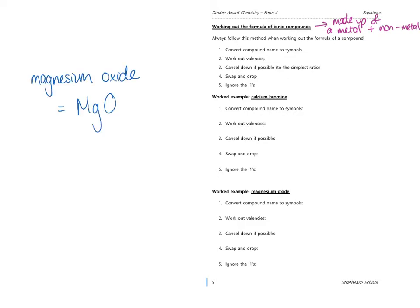For example, the formula of magnesium oxide is MgO — capital M, small g for magnesium, and capital O for oxygen — meaning there is one magnesium for every one oxygen. But for magnesium chloride, the same metal but a different non-metal, the formula is MgCl2, meaning for every one magnesium we have two chlorine atoms. That's because magnesium had to lose two electrons and chlorine can only gain one electron, so we needed two chlorines for every one magnesium.